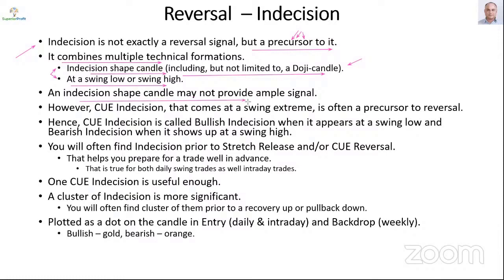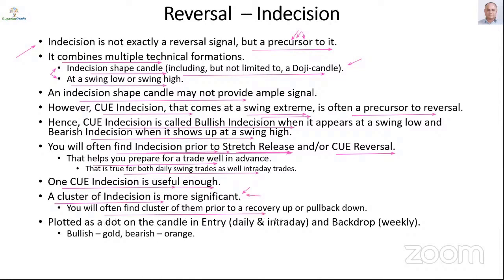An indecision shape candle in itself may not provide ample signal for making trading decisions. However, Q indecision that comes at swing extreme — those are often a precursor to a reversal. Hence Q indecision is called bullish indecision when it appears at a swing low, and bearish indecision when it shows up at a swing high. You will often find indecision prior to stretch release or Q reversal. One Q indecision is useful enough, but often a cluster will come together — they are even more significant, often found prior to a recovery up at swing low or pullback down at swing high.